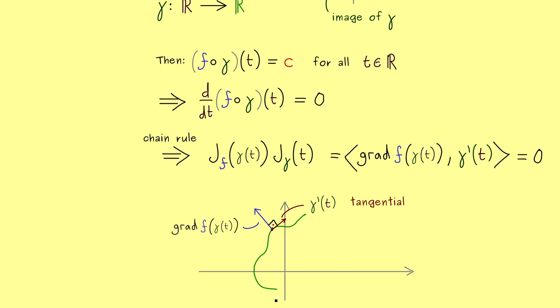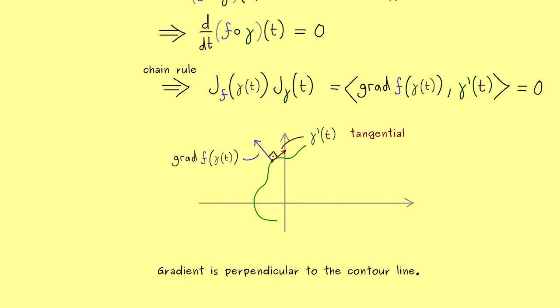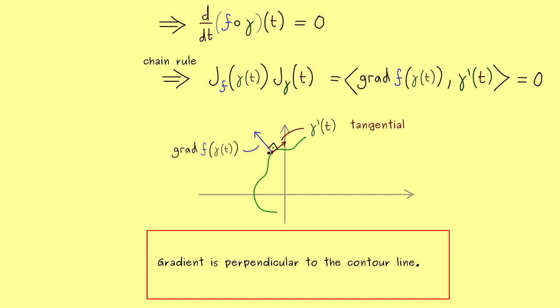And here please recall the curve gamma lies on a contour line of f. In other words we can remember the fact that the gradient is perpendicular to the contour line. So you see if you have a contour line the gradient always points away from it. In fact if you would follow the gradient you would change the values of the function the most.